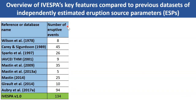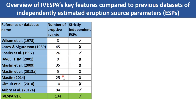I would like to give you an overview of some of the main features of iVespa, starting with the number of events it contains: 134. If you look at other datasets, that's four to five times more than most of them. I also want to stress that we paid particular attention to the fact that the eruption source parameters collected were strictly independent, which was not the case in all previously existing datasets.